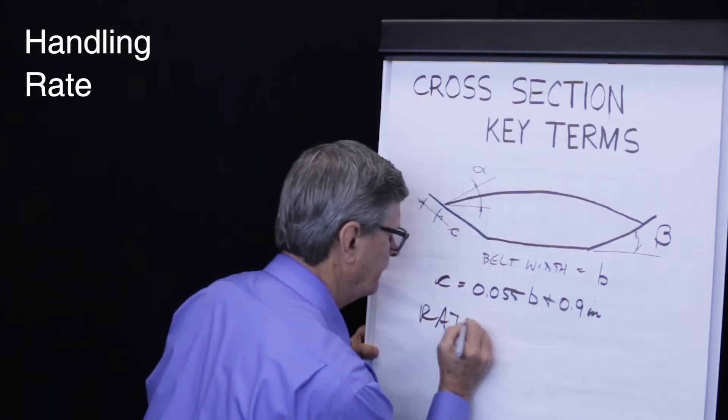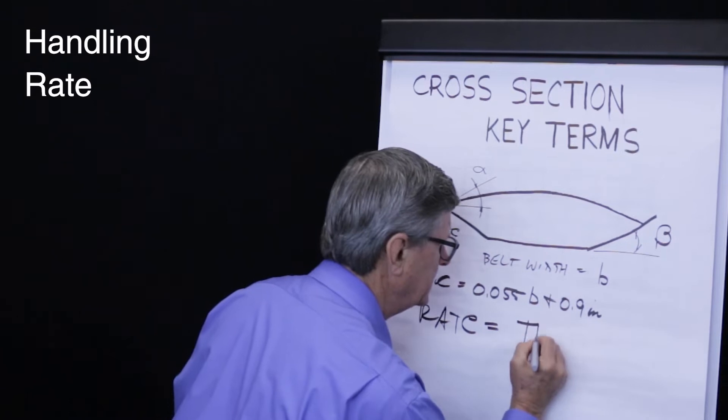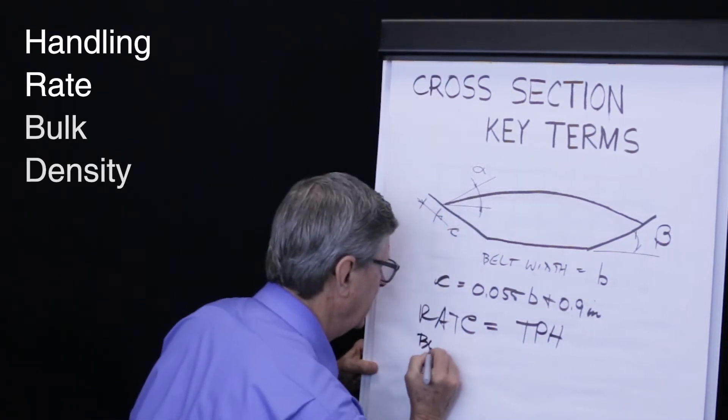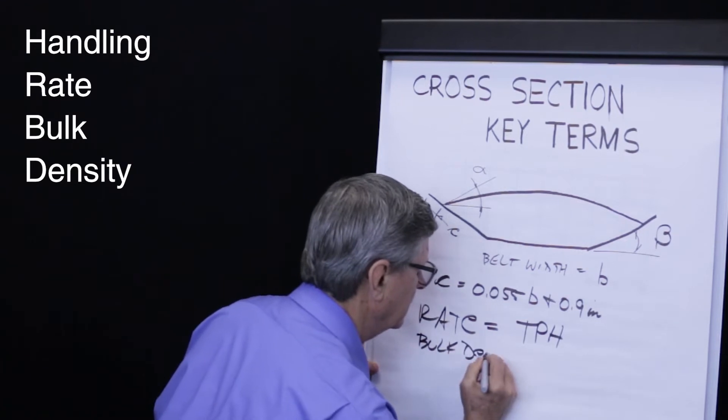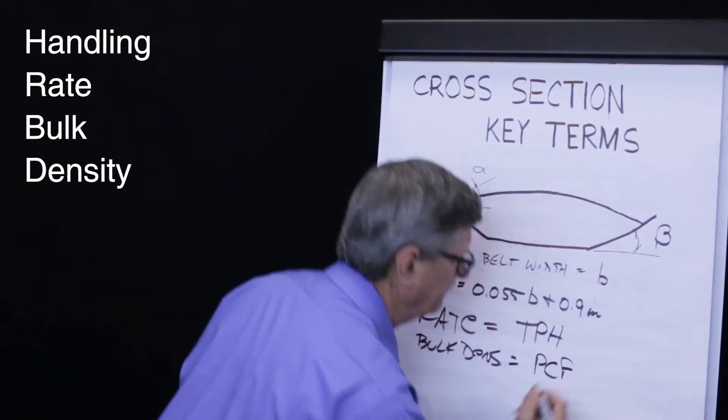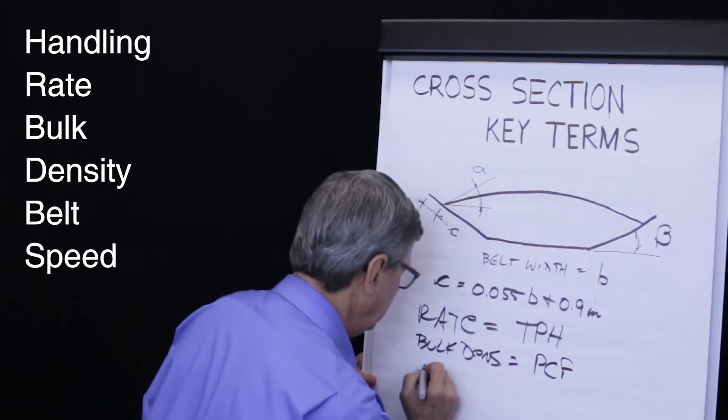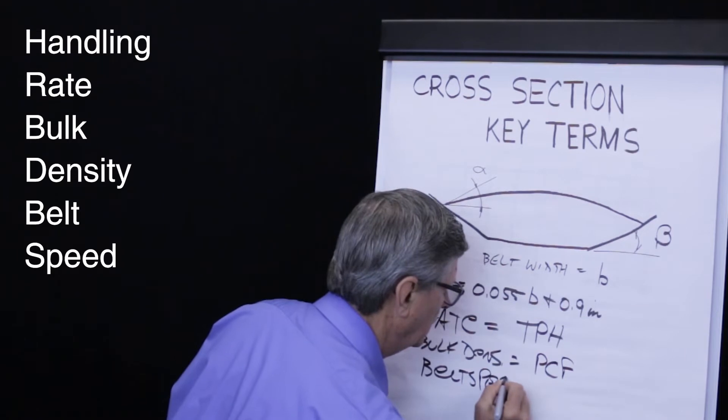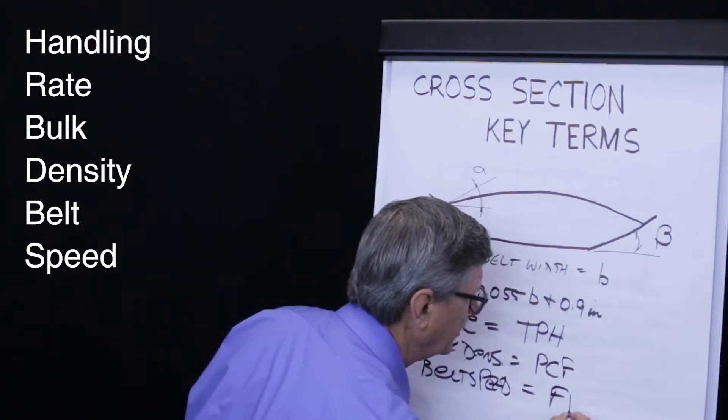We need to know the rate, handling rate, which is expressed in tons per hour. We need to know the bulk density, which is expressed in pounds per cubic foot. And we need to know the belt speed, which is expressed in feet per minute.